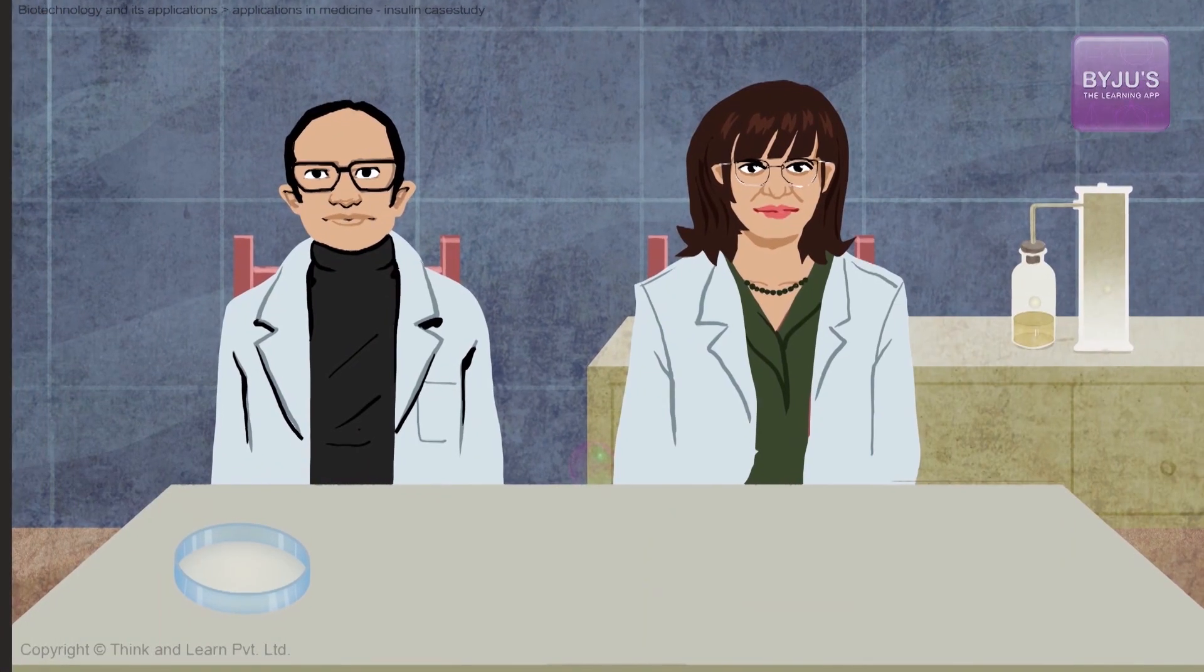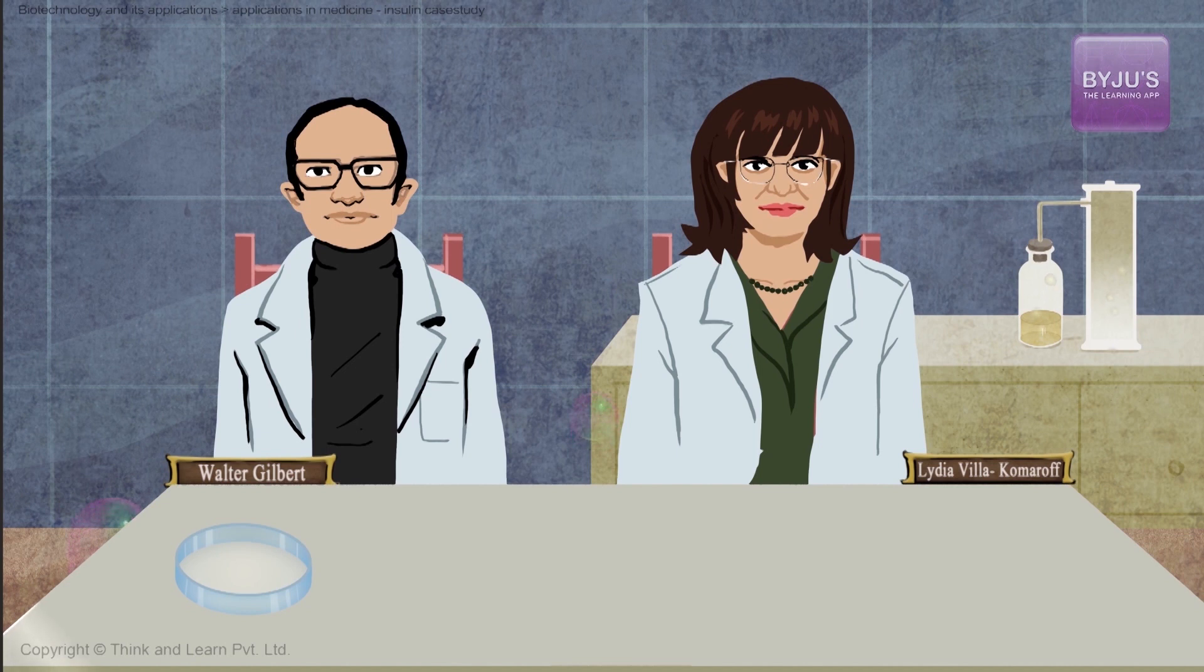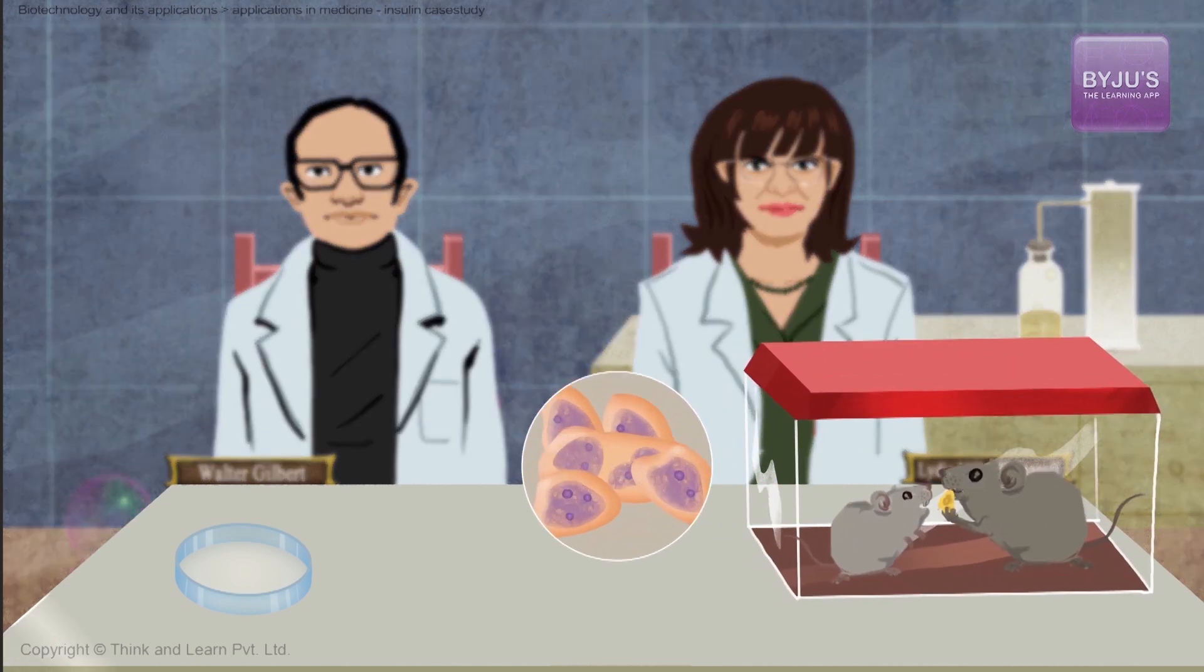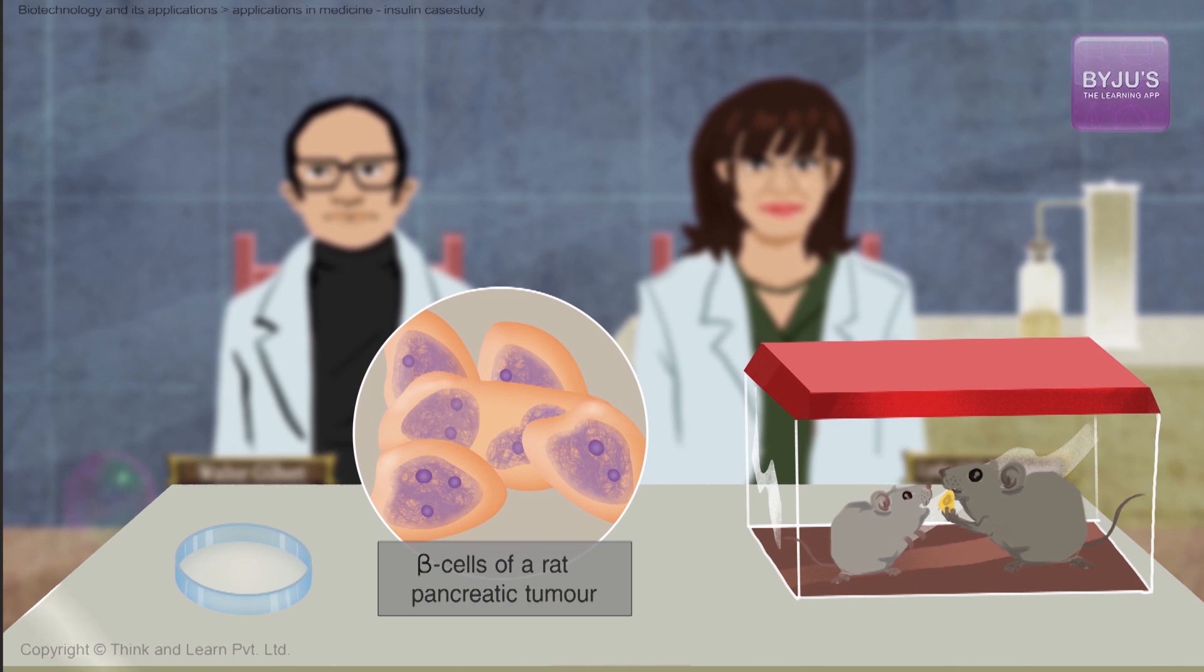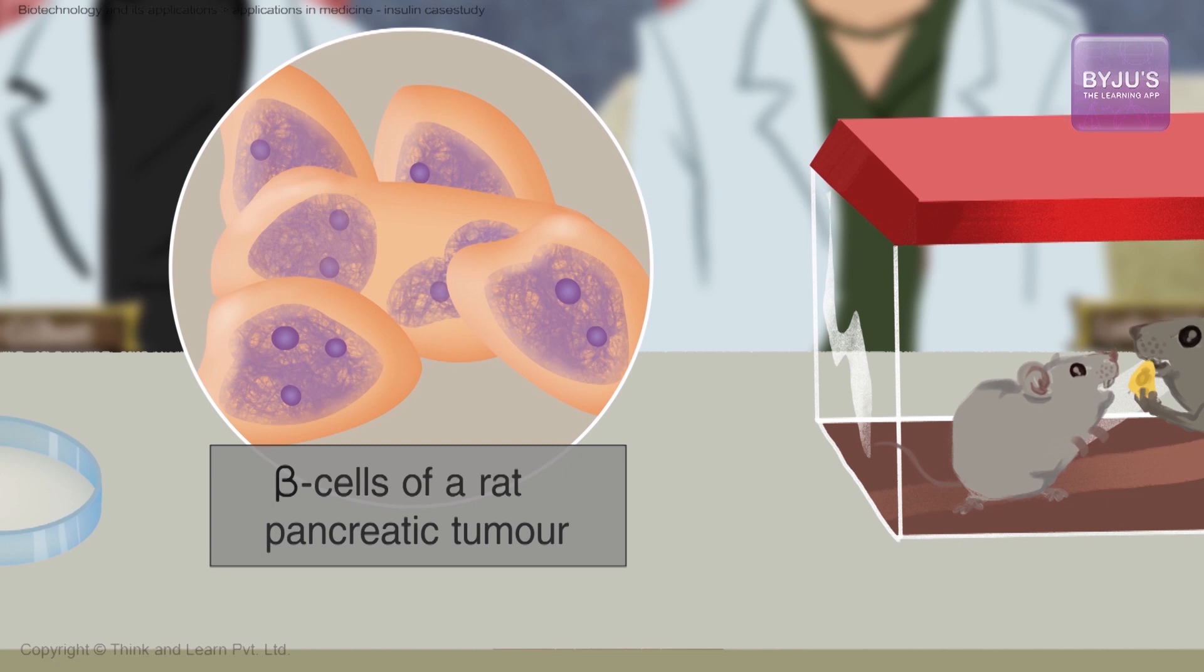In order to produce genetically engineered insulin using bacterial cells, Walter Gilbert and Lydia Vyakomorov from Harvard University used animal cancer cells, beta cells of a rat pancreatic tumor. When they were beginning their research, experimenting with human genes was still prohibited.